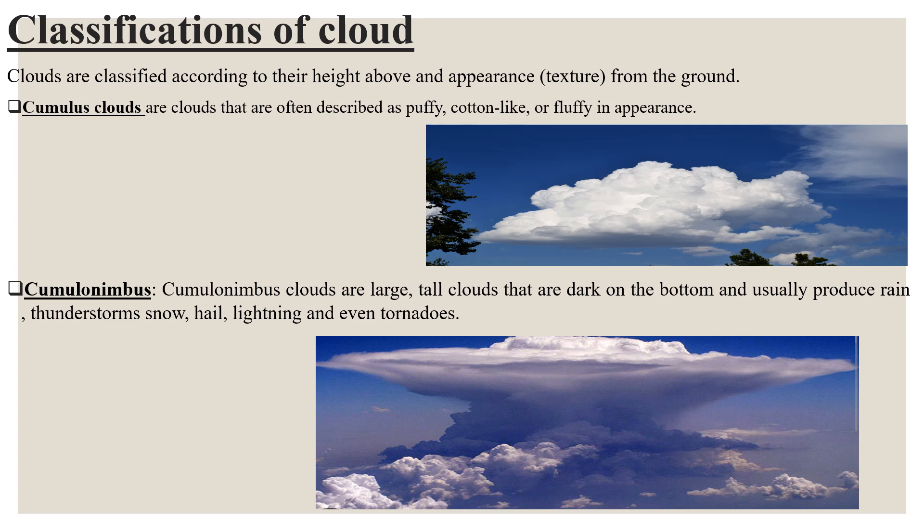Classifications of cloud: by looking at these pictures, we can see there are different clouds with different appearances. Clouds are classified according to their height above ground and appearance, textures, or how they look from the ground. Cumulus clouds are often described as puffy, cotton-like, or fluffy in appearance. Cumulonimbus clouds are large, tall clouds that are dark on the bottom and usually produce rain, thunderstorms, snow, hail, lightning, and even tornadoes.